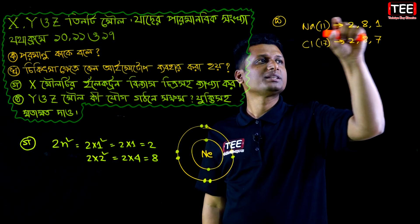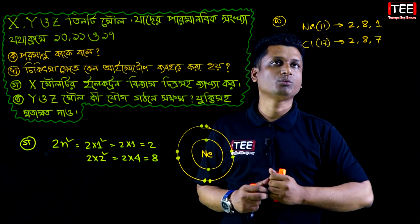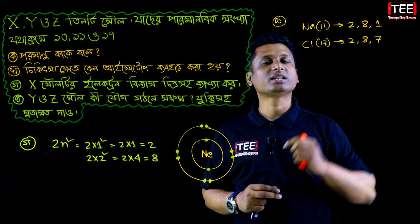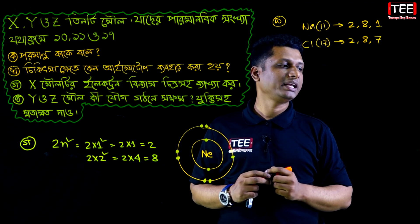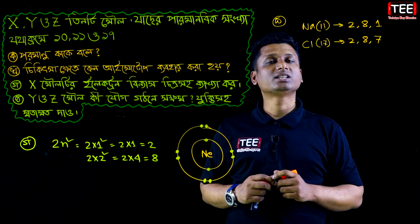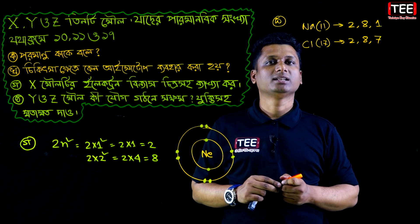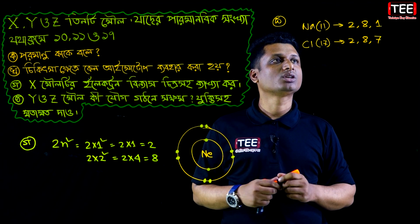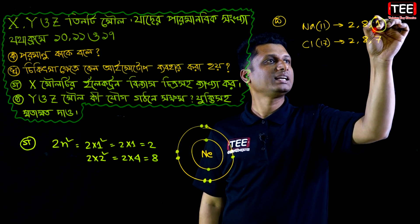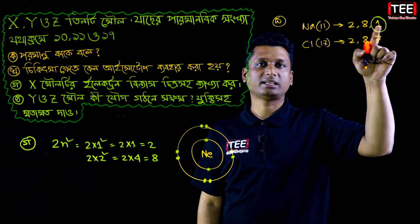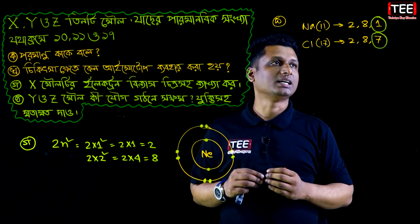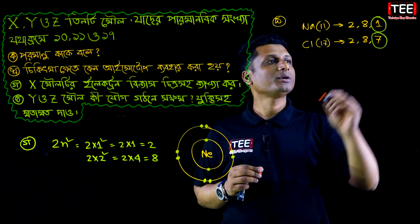So, if sodium has 1 electron in its outer shell, that matters. Chlorine also needs 1 electron. It means that both are affected. So what should we do? In this case, the electron is 1 electron — sodium has 1 electron and chlorine needs 1 electron. It gives 1 electron.